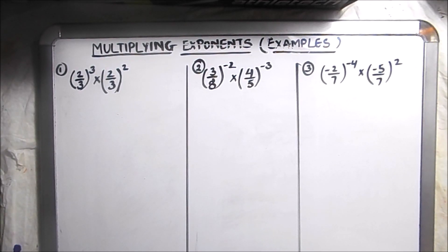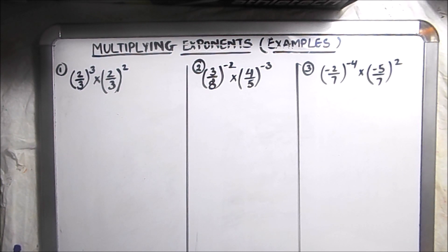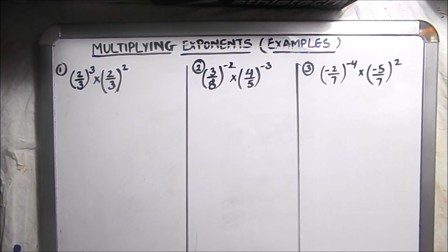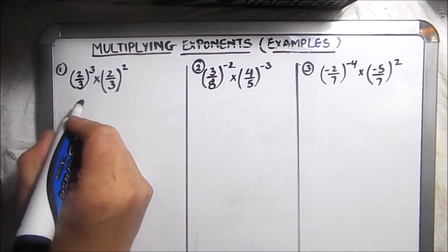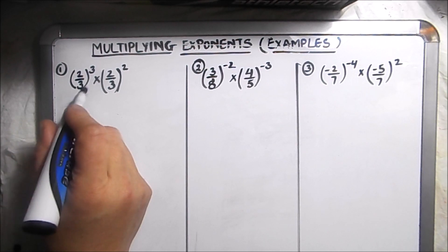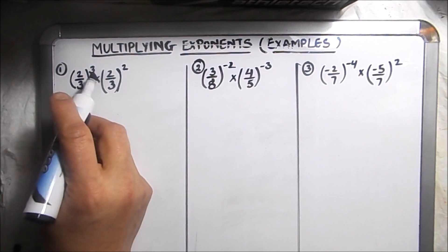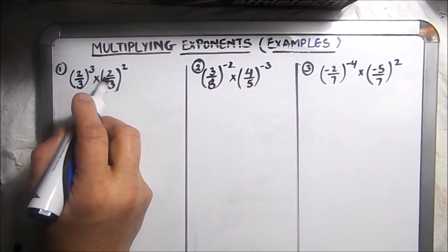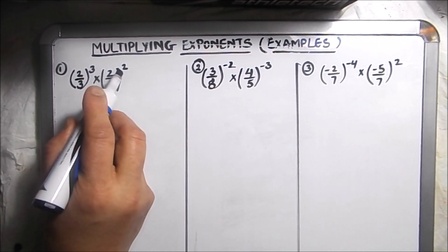Hello viewers, in this video we are going to solve a few examples of multiplying exponents and understand how we apply the rules of exponents. Let's get started with our first example, which is 2 over 3 to the power 3 times 2 over 3 to the power 2.